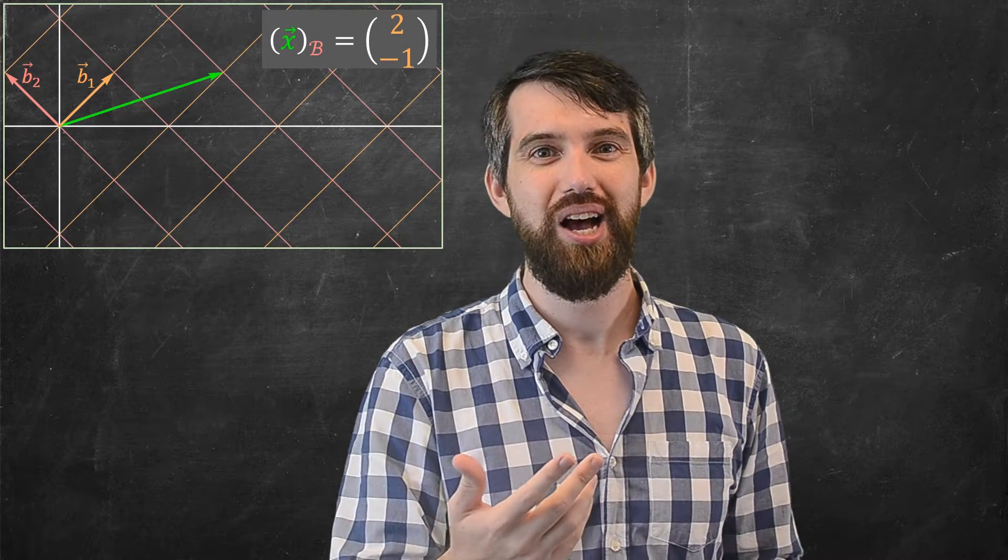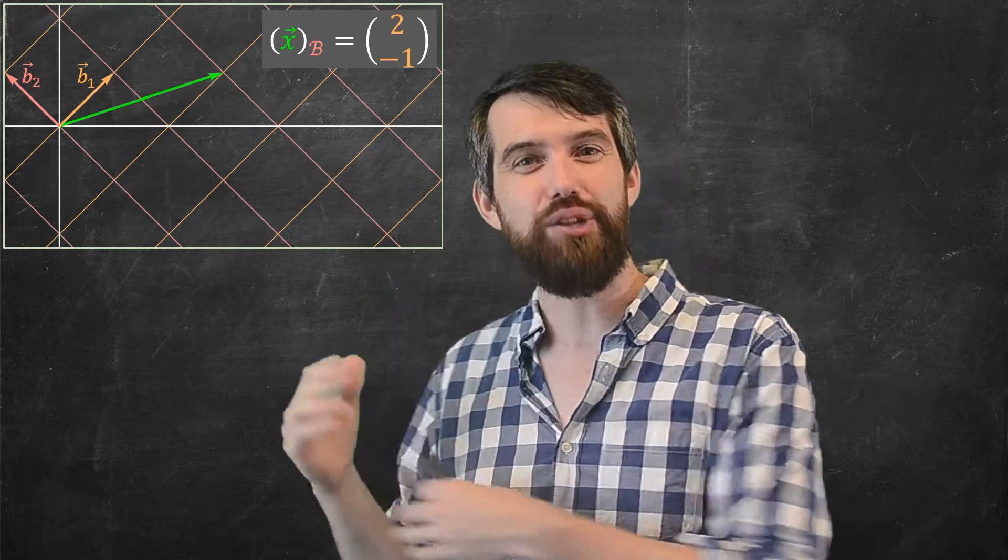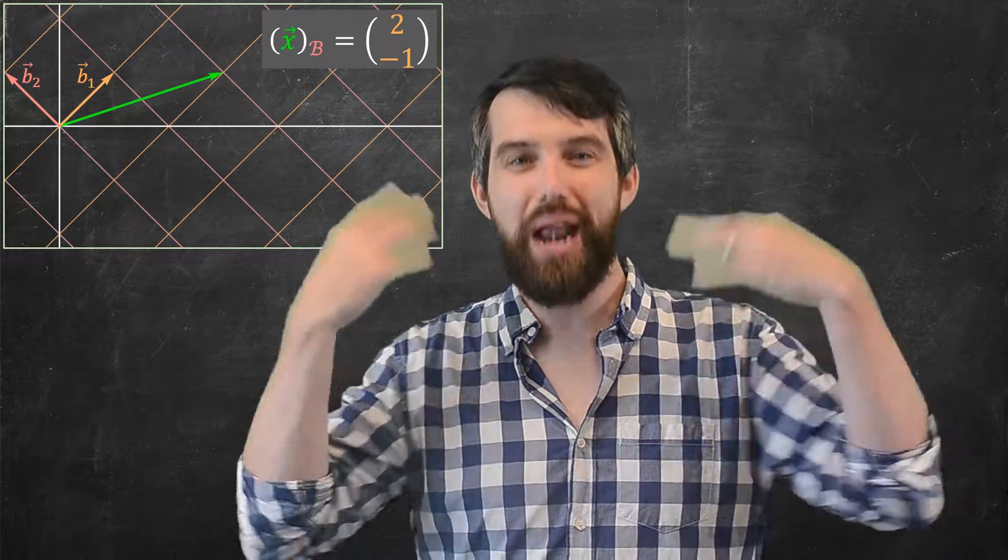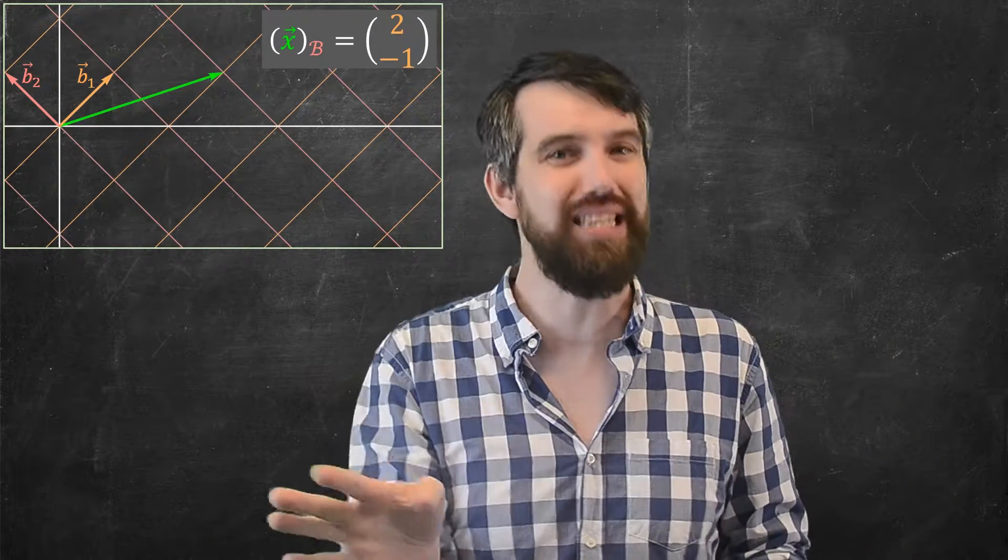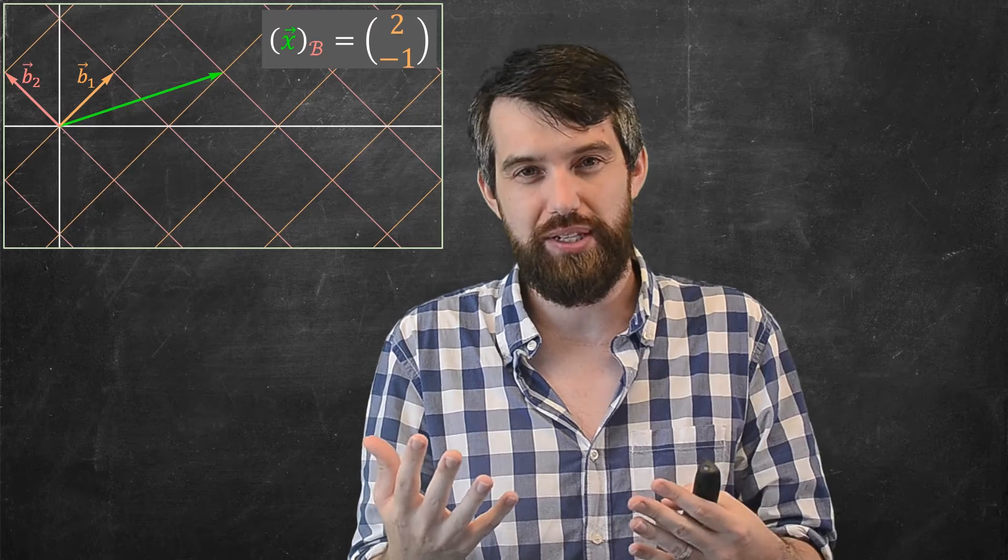So my first question is, what on earth does this basis look like to somebody who sort of has grown up in the b basis and never seen the standard system? How would they draw a grid system?